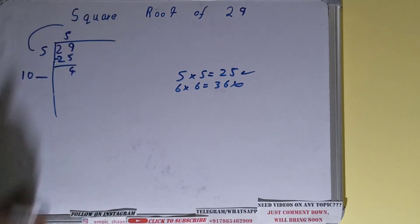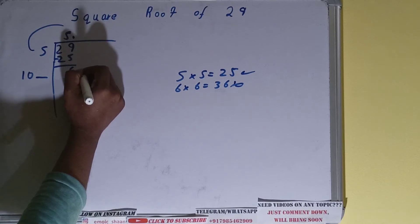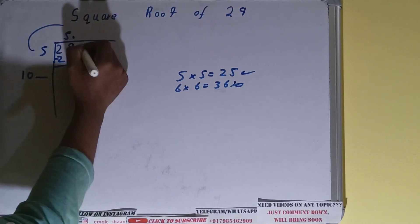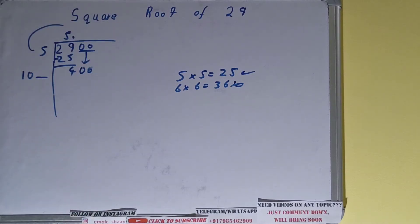And over here, what you need to do is, because this number is smaller than this three-digit number, take decimals. So we'll take a decimal and we'll put zeros from here. Always take pairs of zeros, not single zeros.